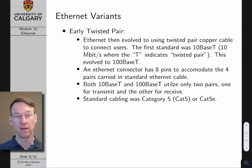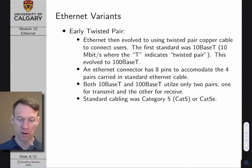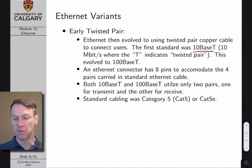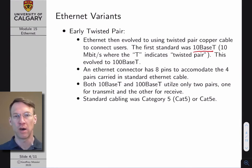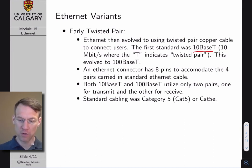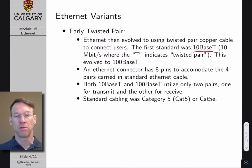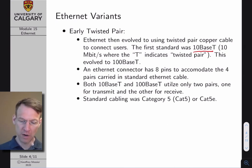Very quickly, Ethernet transitioned to twisted pair copper wire, giving us the 10BaseT version of Ethernet. The 10 refers to 10 megabits per second — the original raw physical throughput of Ethernet. 10BaseT referred to twisted pair, and this eventually evolved into 100BaseT, and now we have Gigabit Ethernet that also works over twisted pair.